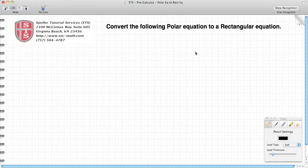Welcome back to Speller Tutorial Services. In today's video, we're going to work on converting a polar equation into a rectangular equation. Let's quickly review. We know that polar equations have the variables r and theta, where r is a radius and theta is an angle created by the radius. We know that rectangular equations deal with just the variables x and y, so we want to go from r, theta to x, y. Let's take a look at an example.